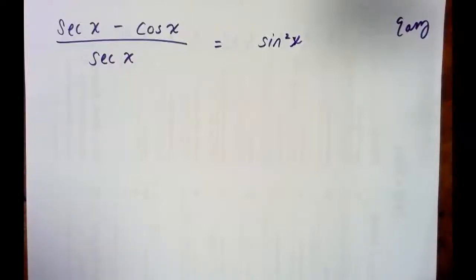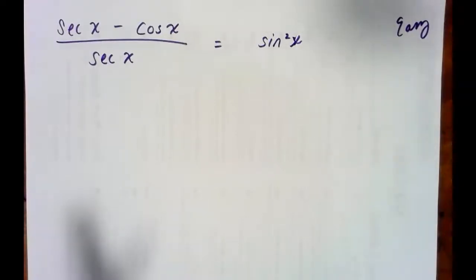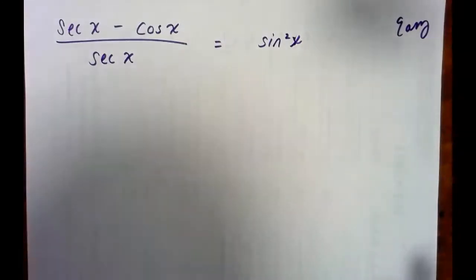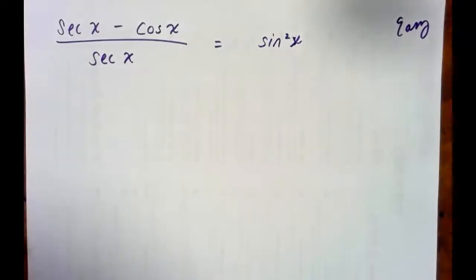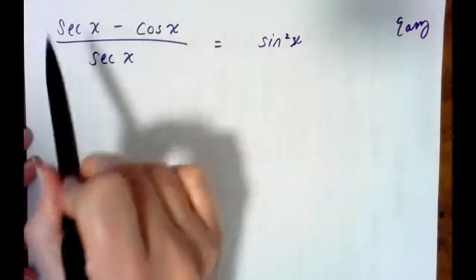Hello boys and girls, here are some identities to verify. Just remember that when we're verifying identities, we have to work independently on each side — work only on the left, only on the right, and try to transform. We try to pick the side that's more complicated; in this case it would be the left.